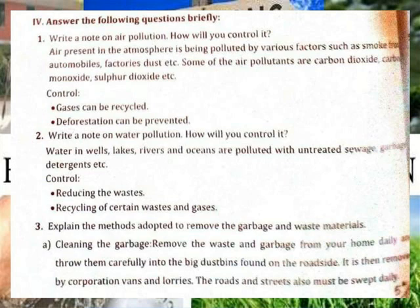Control of air pollution: gases can be recycled, deforestation can be prevented. Water pollution: How will you control it? Water in wells, lakes, rivers and oceans are polluted with untreated sewage, garbage, detergent, etc. Control: reducing the waste, recycling of certain waste and gases.